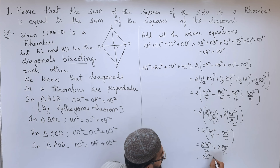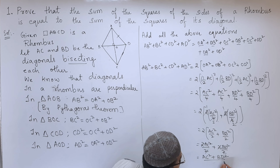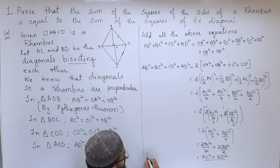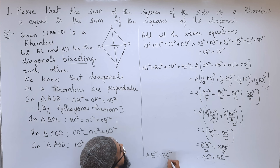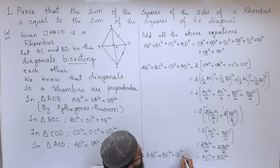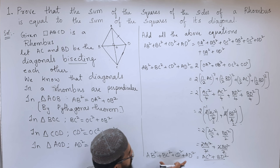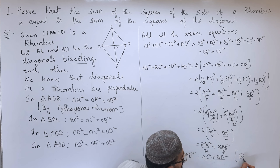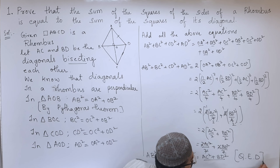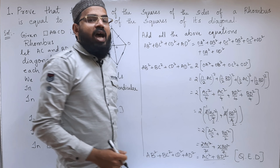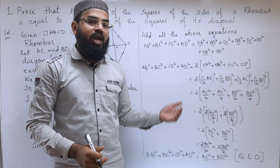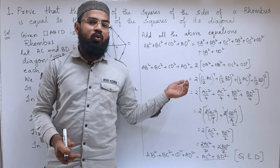So it equals AC² + BD². AC and BD are the diagonals, so this is the sum of squares of the diagonals. Therefore, we have shown that the sum of the squares of the sides of a rhombus equals the sum of the squares of the diagonals. Hence proved — QED, Quod Erat Demonstrandum — meaning we have shown what was asked to be shown.